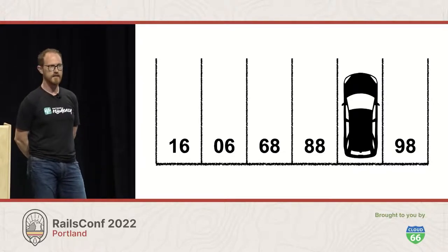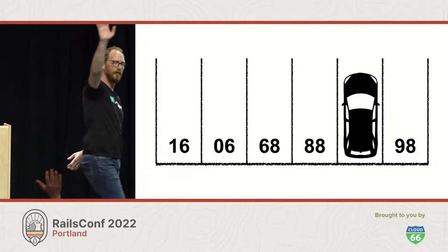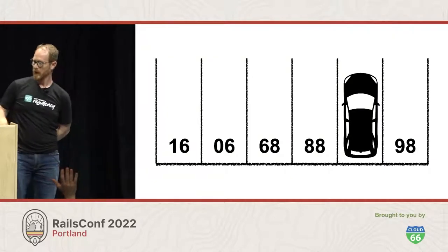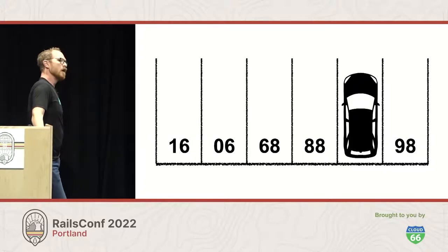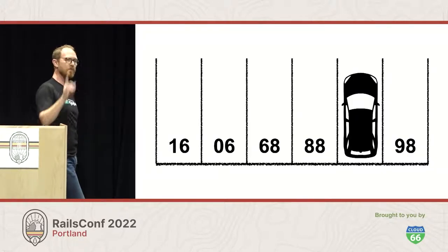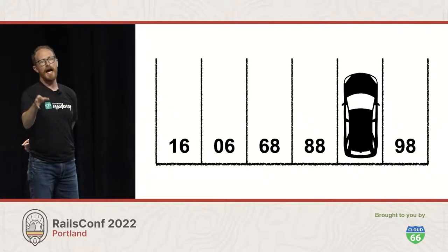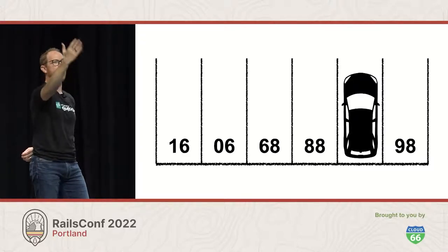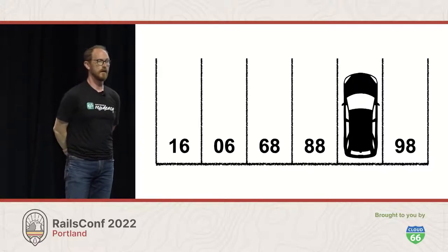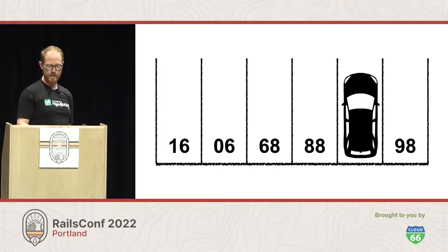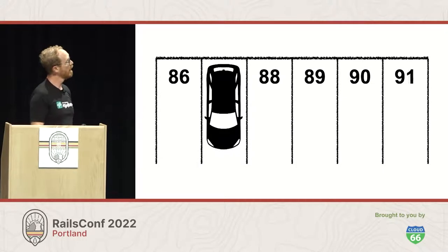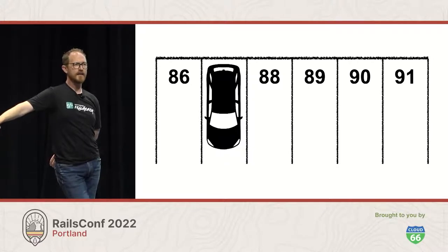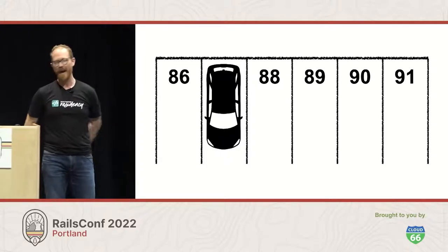We'll give you another 10 seconds — if you think you know the answer just put your right hand up, and it's okay if you don't. Taking some guesses from the audience: 80, 78. Let me help you out a little bit — what if I did this? Interesting, right? What number is it? Totally — it's 87.